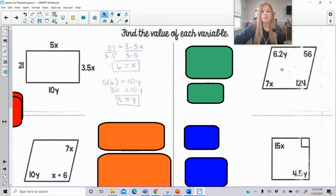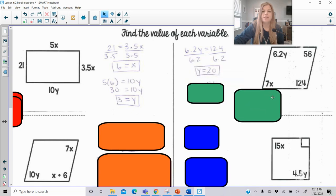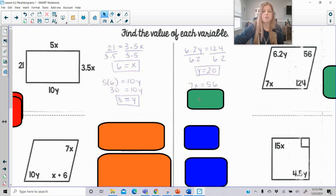In this next problem here, 6.2y would be equal to 124 because they are opposite angles. Opposite angles are congruent to each other, so their measures are equal, and that would let me solve for y. y is 20, and then my opposite angles here, 7x and 56 would be equal to each other, and x is equal to 8.